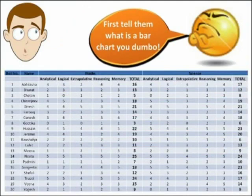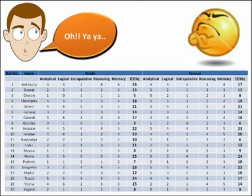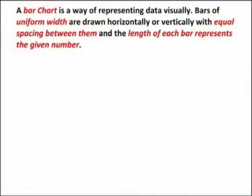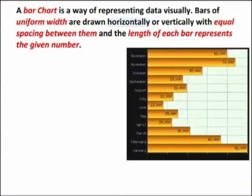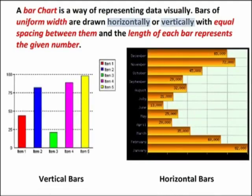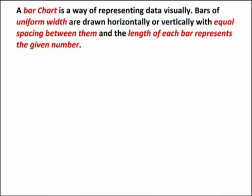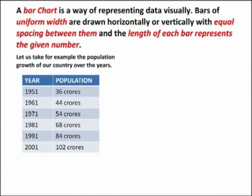A bar chart is a way of representing data visually. Bars of uniform width are drawn horizontally or vertically with equal spacing between them, and the length of each bar represents the given number. Let us take, for example, the population growth of our country over the years.